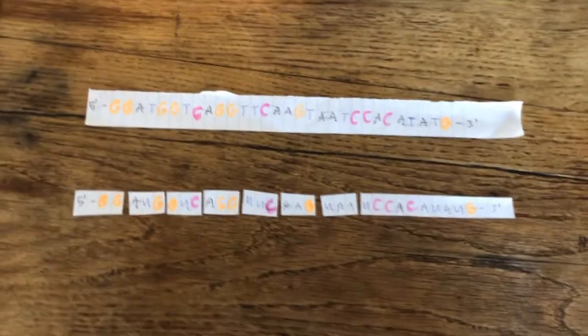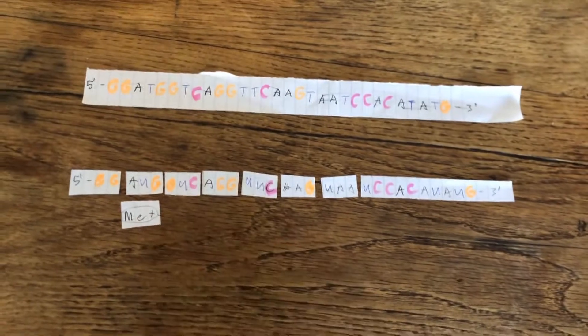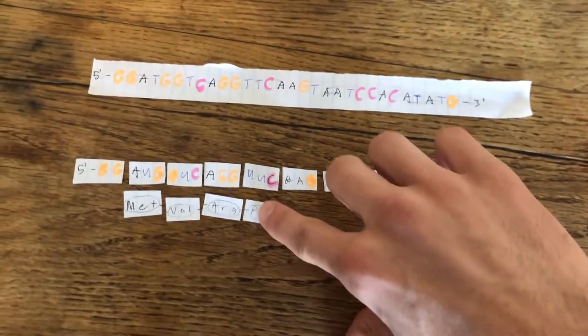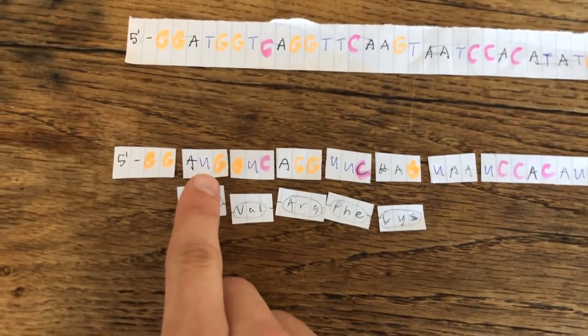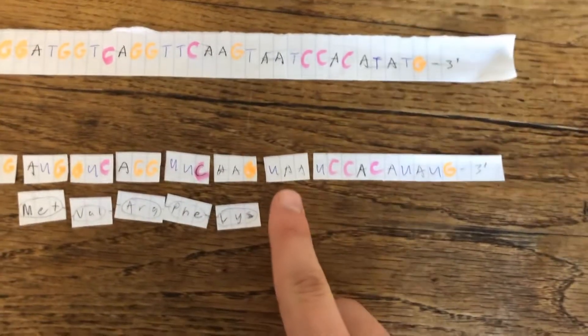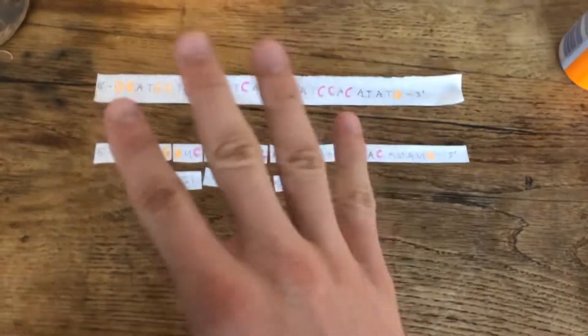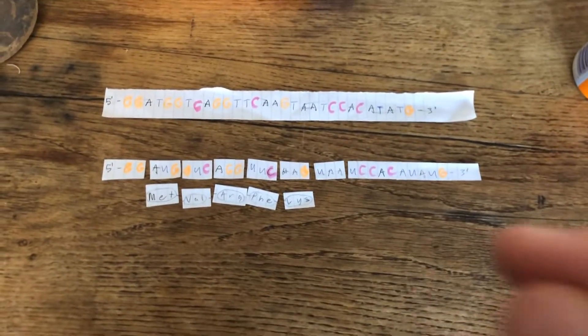With this new mRNA strand, ribosomes will come in and create this string of amino acids from these codons on the mRNA strand. This will be our result. See here, this is where our start codon is, and this is our stop codon. Let's run through what would happen if we had 4 different unique DNA point mutations.